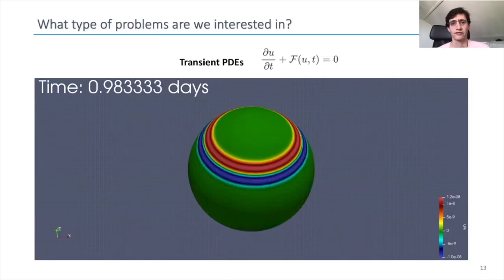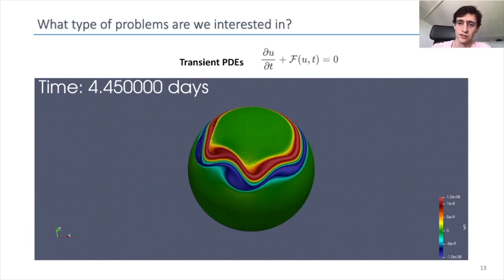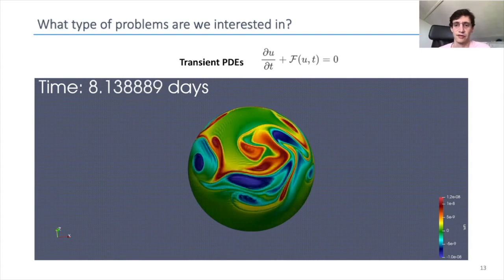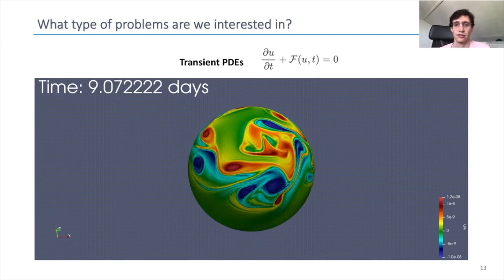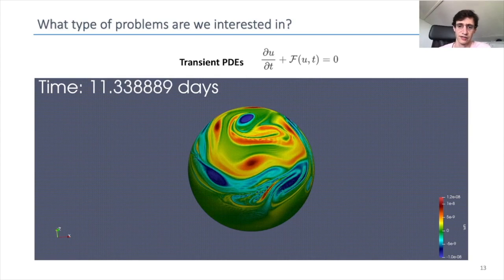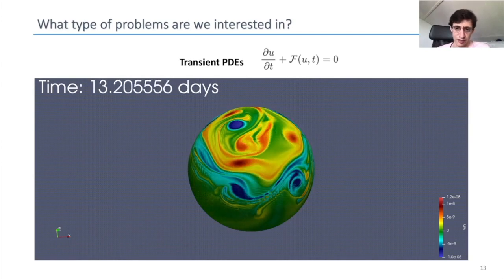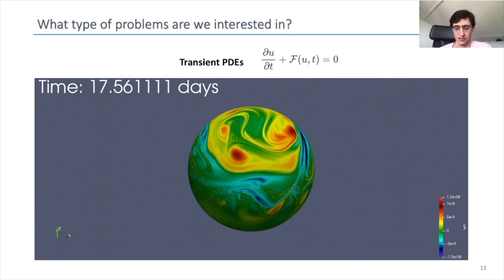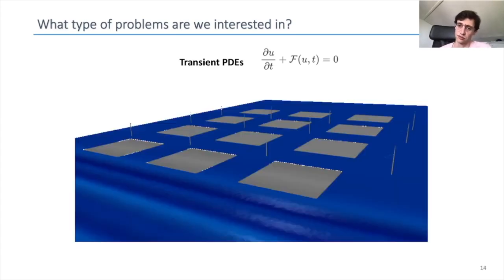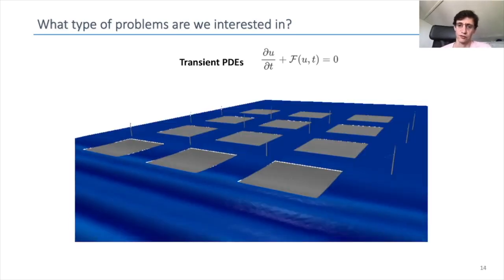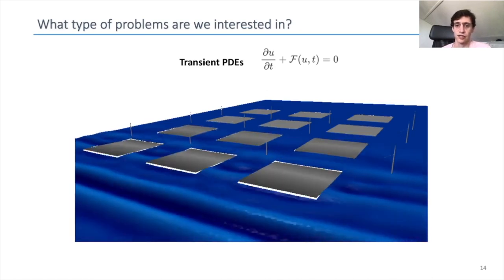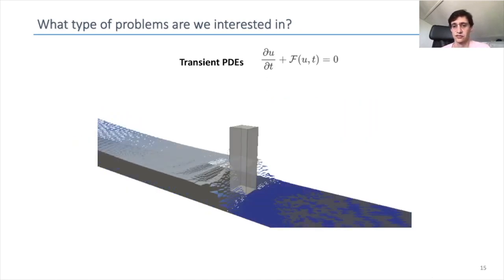So what type of problems are we interested in? We want to solve transient PDEs, meaning that we have the appearance of the time derivative of the unknown in the equation and we have problems that evolve in time. This is the case, for instance, of the shallow water equations on the sphere. We also have problems such as waves interacting with flexible structures or tsunami-type waves interacting with fixed structures.